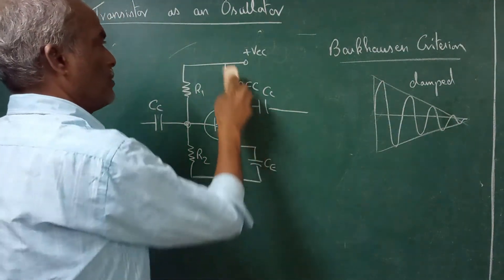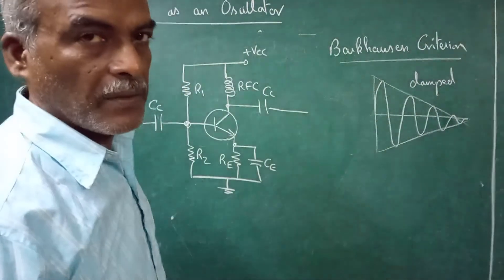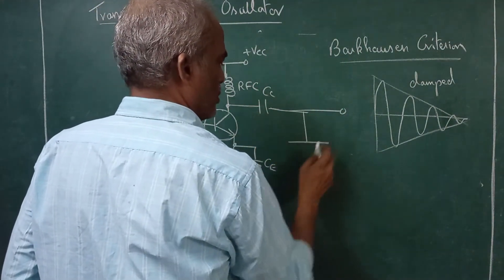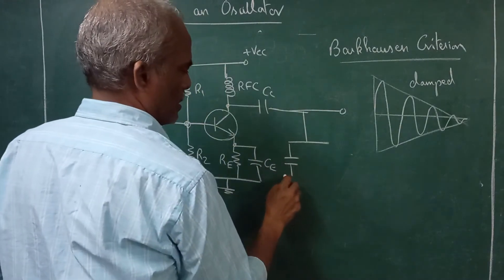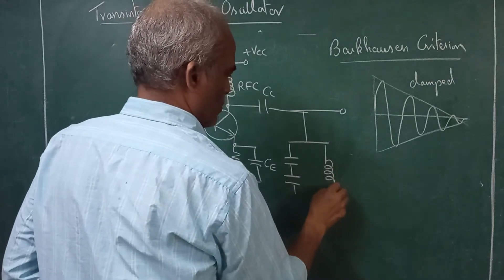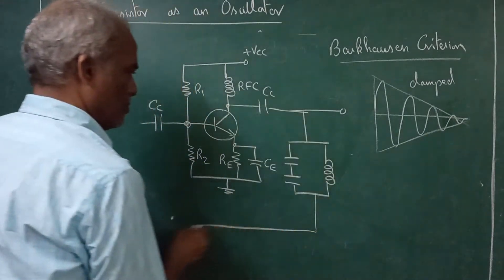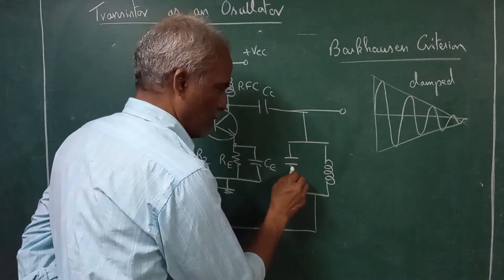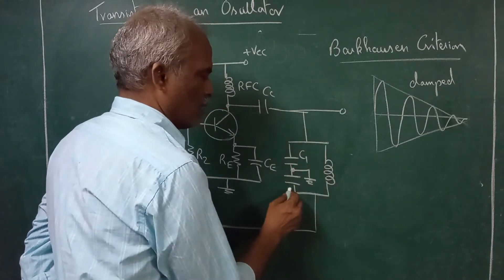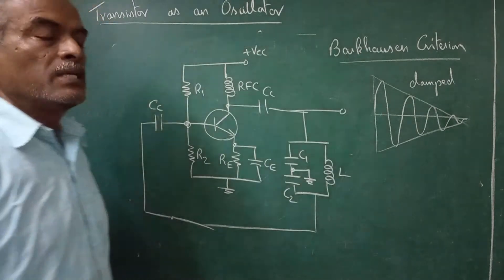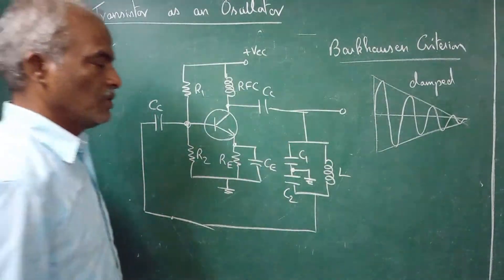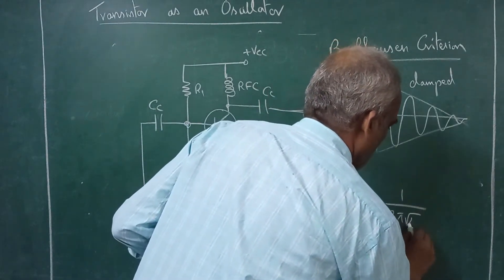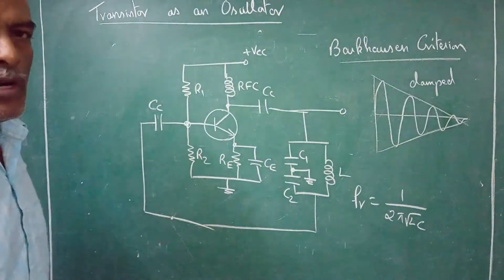We have constructed an amplifier. What next we need is the tank circuit. From here we take the output and introduce a tank circuit. This is the tank circuit — the center point is grounded. This is C1, C2, and this is L. The resonant frequency of this tank circuit is given by fᵣ = 1 / (2π√LC). Basically, this circuit is called Colpitts oscillator.